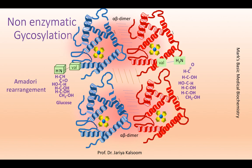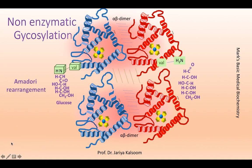Similar non-enzymatic glycosylation reactions occur on other proteins. Four minor components of adult hemoglobin result from post-translational non-enzymatic glycosylation of different amino acid residues. Of these, hemoglobin A1c is usually measured, which is glycosylated on the N-terminal valine.